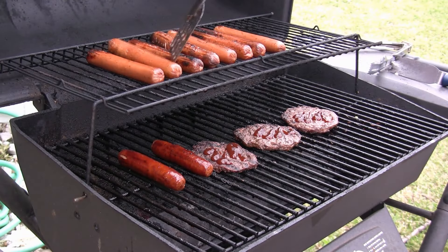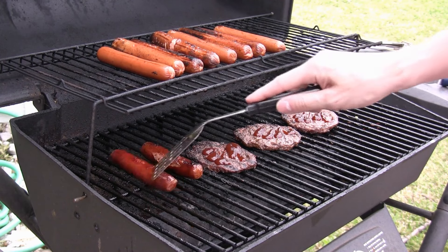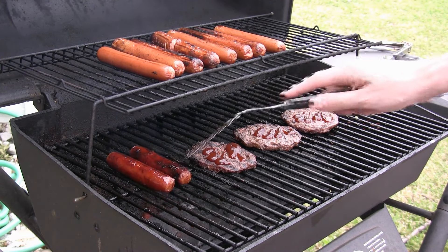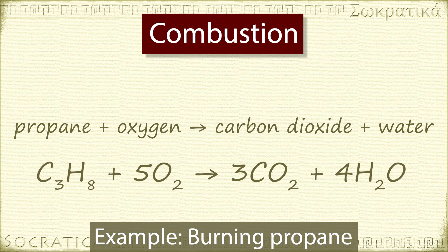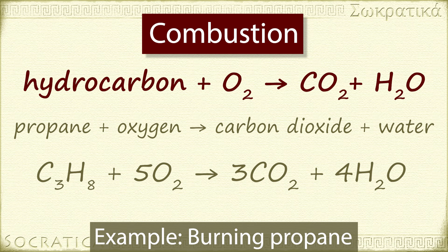We still use combustible materials in transportation and cooking. You might use a propane grill at home. When you cook on the grill, propane takes part in a combustion reaction. Here's the balanced chemical equation. C3H8 plus 5O2 yields 3CO2 plus 4H2O. The general form of this kind of combustion reaction is hydrocarbon plus O2 yields CO2 plus H2O.